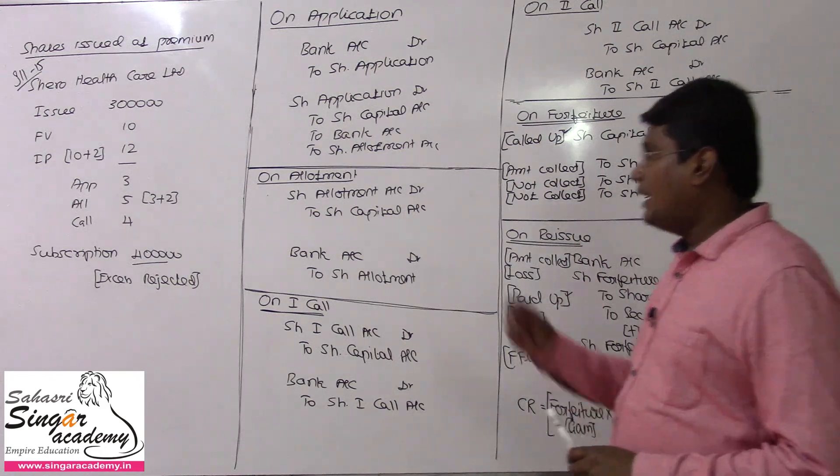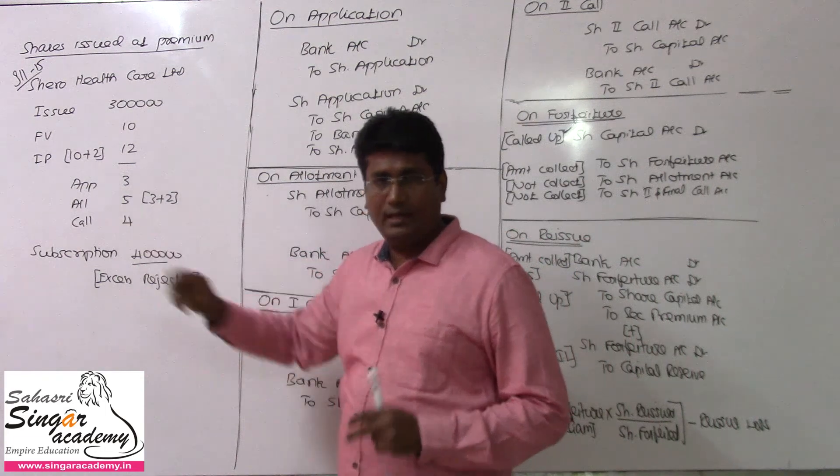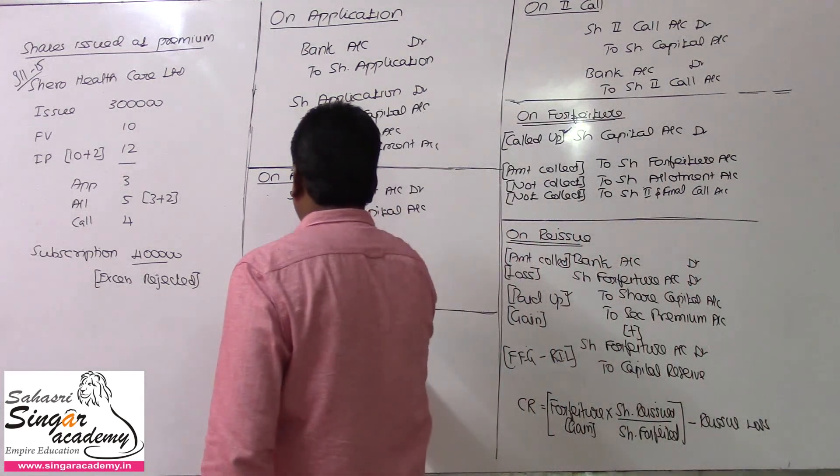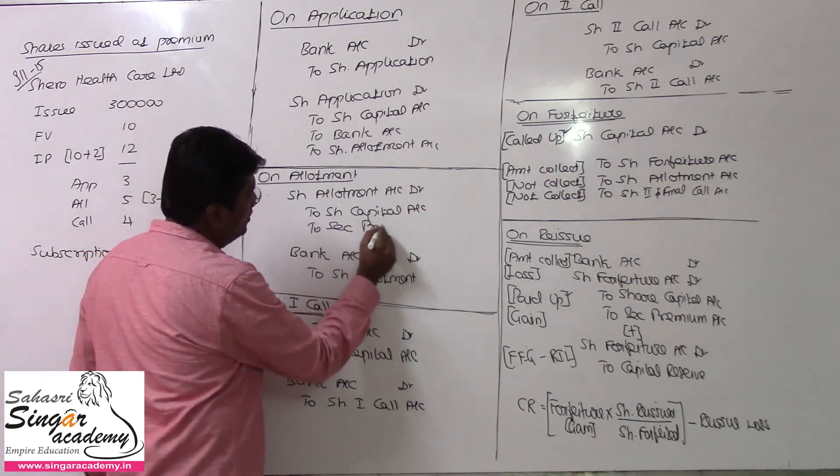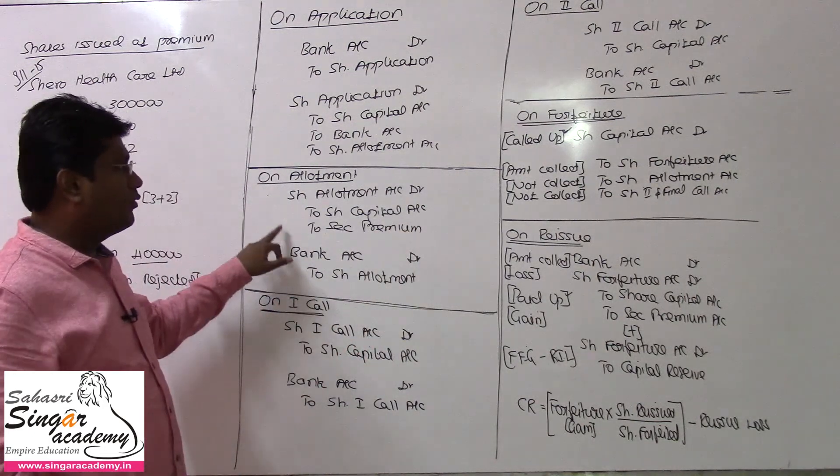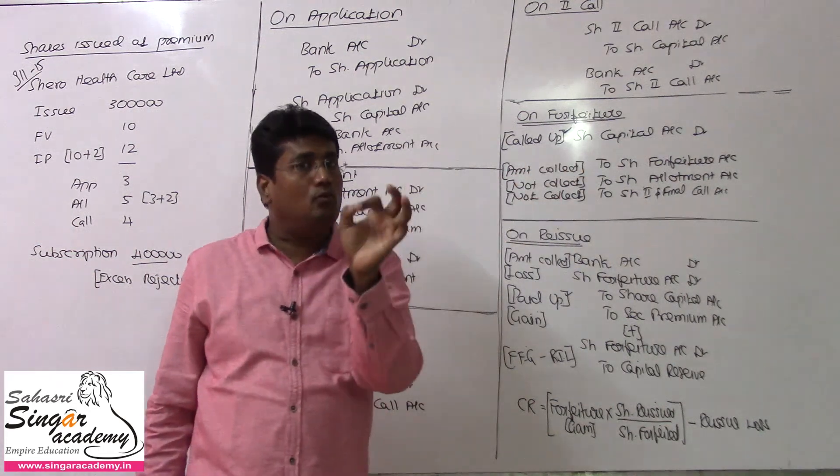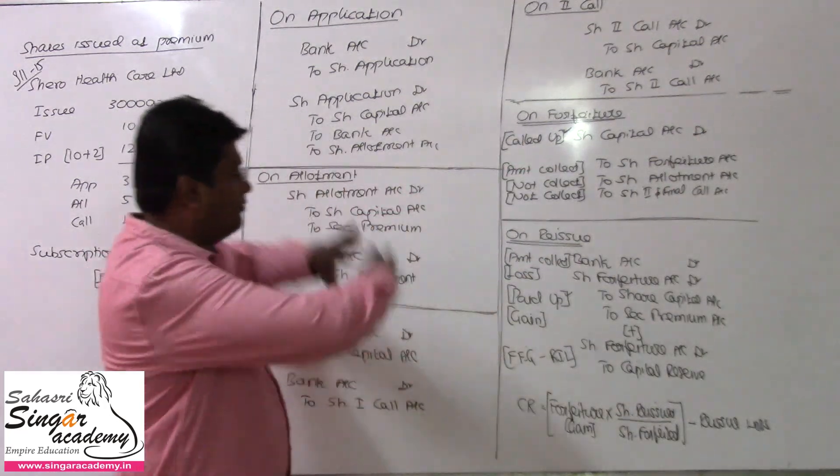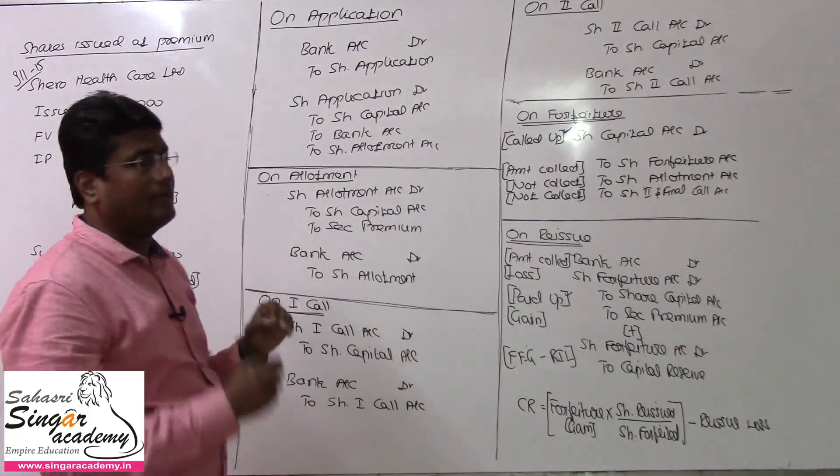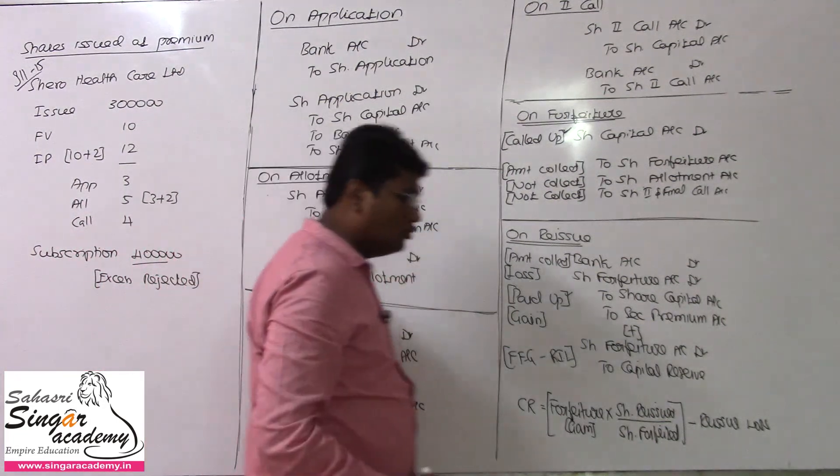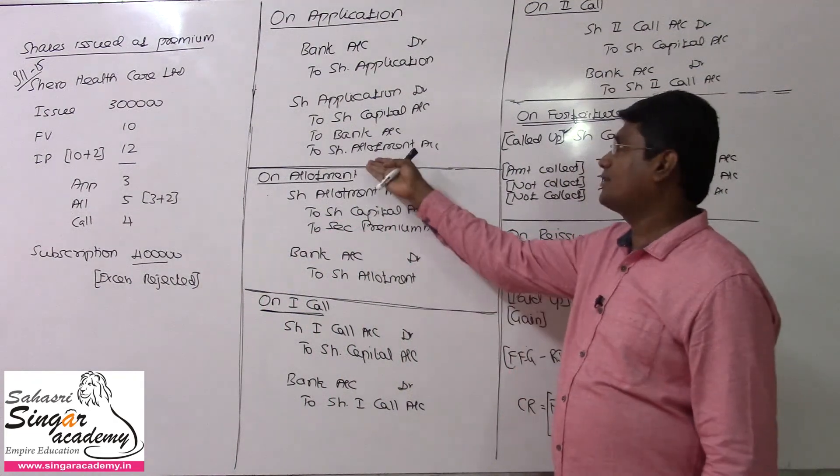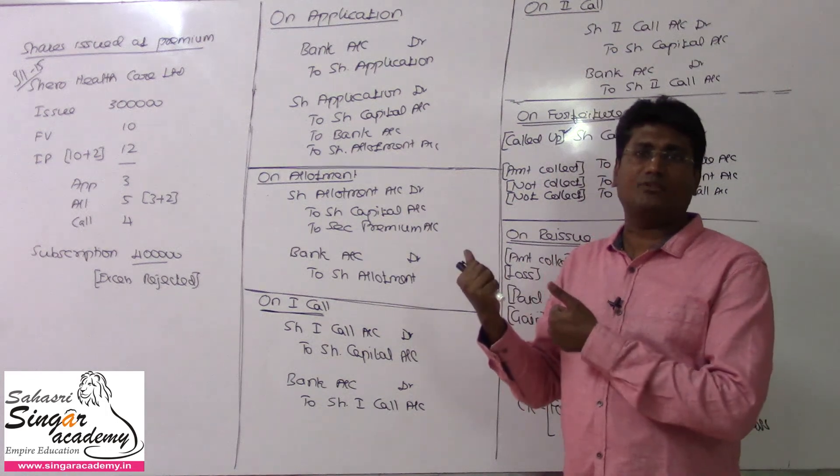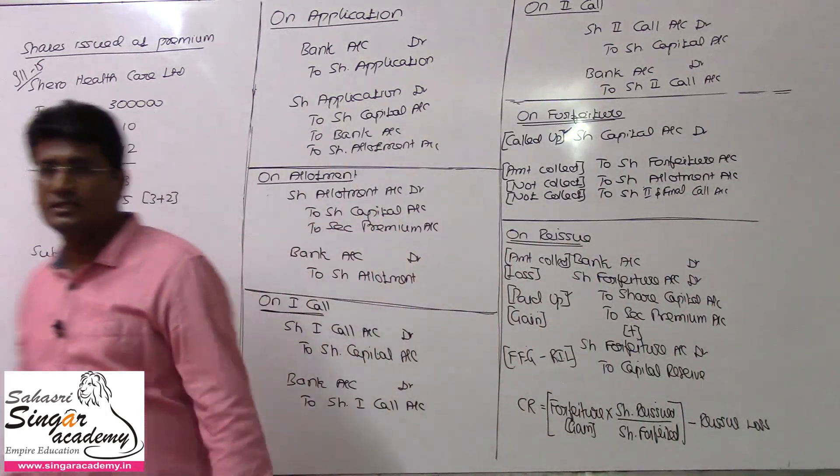Premium at allotment level. The allotment amount of 5 rupees includes capital and securities premium. This is the securities premium case. Bank to share application, share application to share capital and securities premium. At allotment, share allotment account debit to share capital and securities premium. This is how we can think it over.